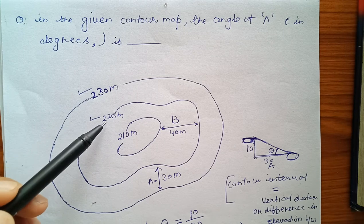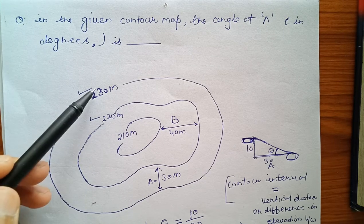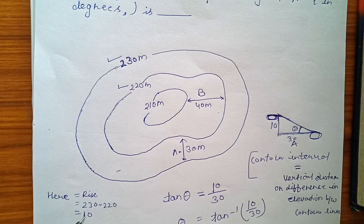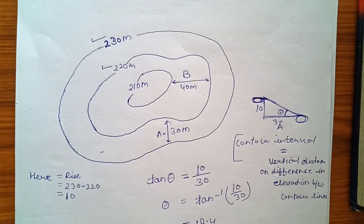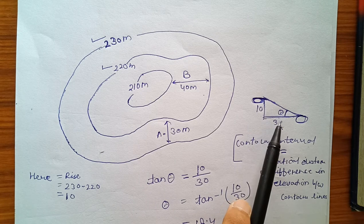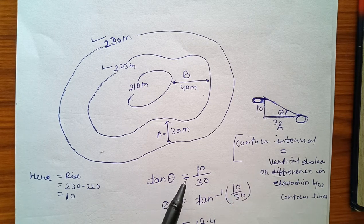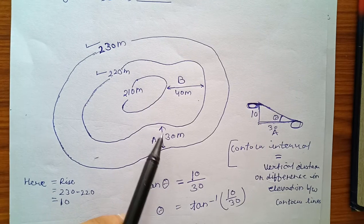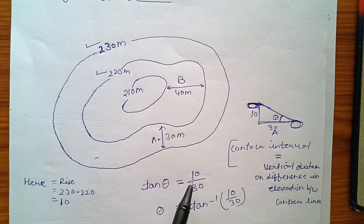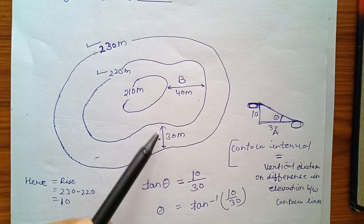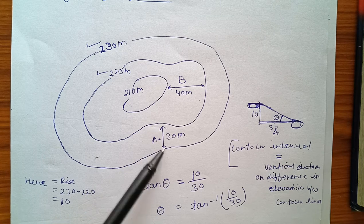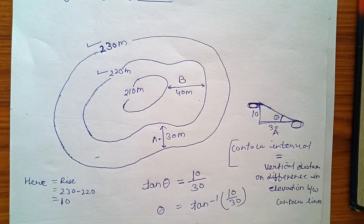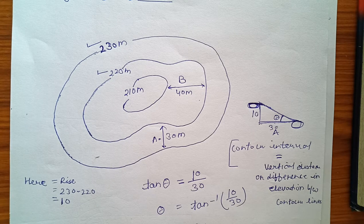This is the contour elevation 230 meters and this is at 220 meters. So we find the rise difference is equal to 230 minus 220, which gives 10. Applying the tan theta formula here, tan theta is equal to perpendicular over base. So rise of this contour difference we found is 10.